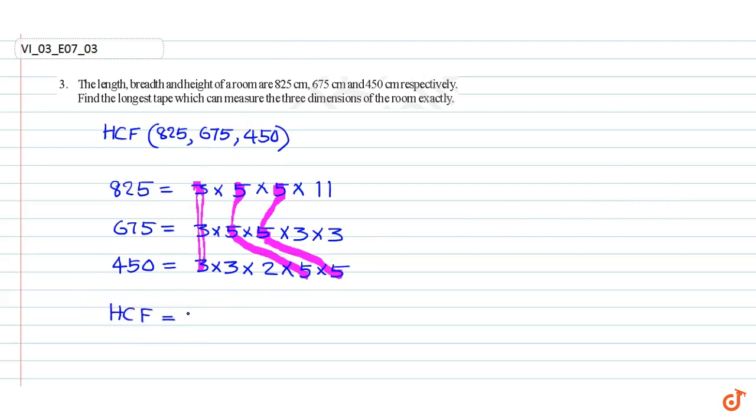75. Therefore the longest tape which can measure the three dimensions of the room exactly is 75 centimeters, 75 cm. That is our answer.